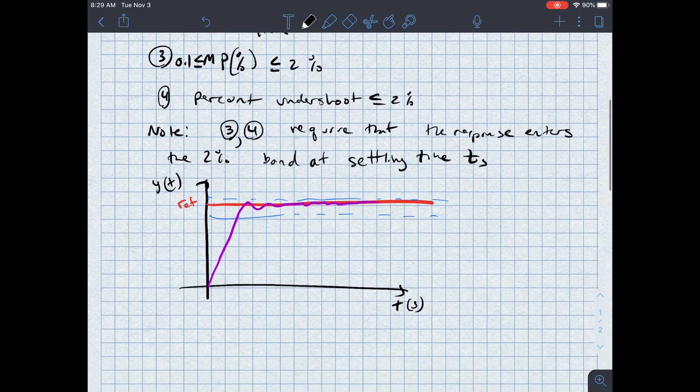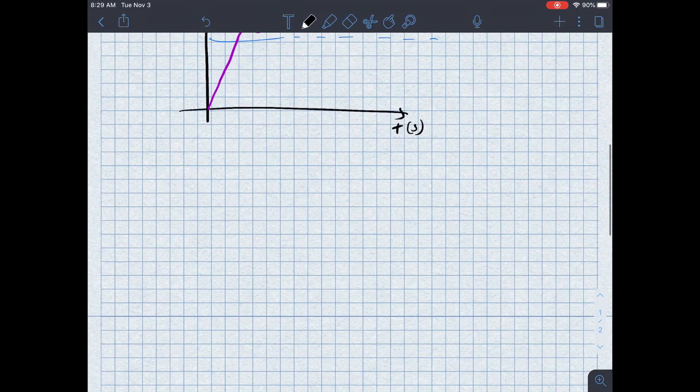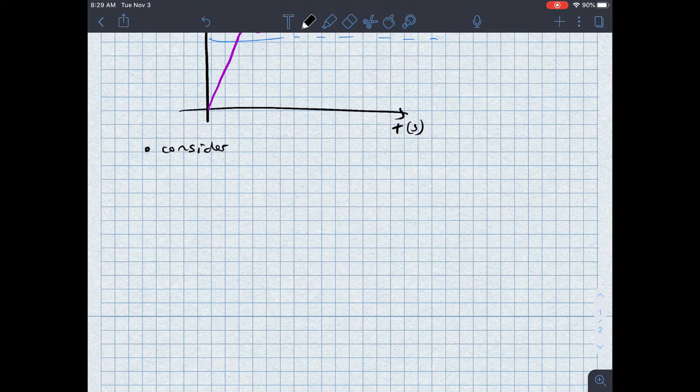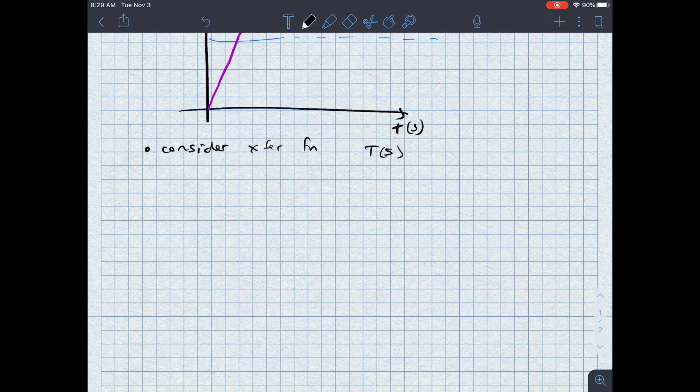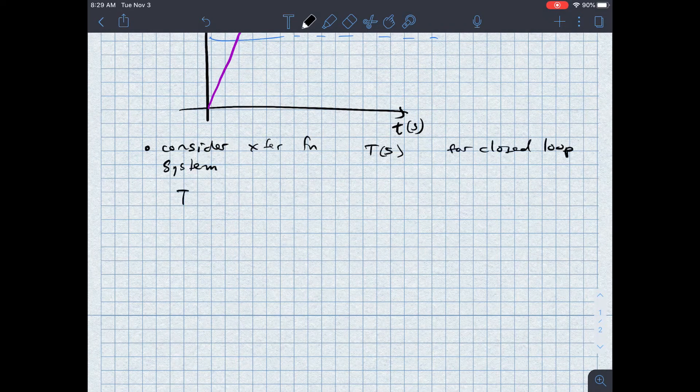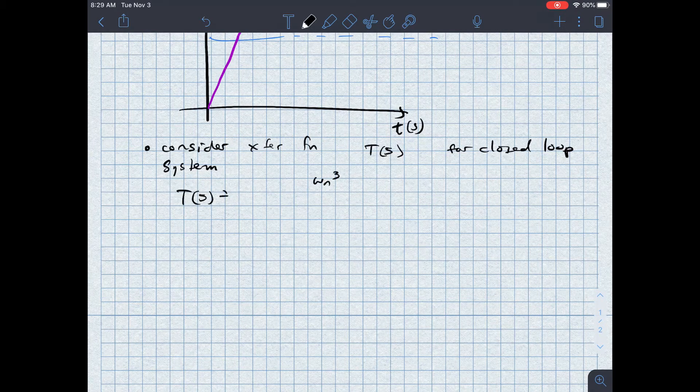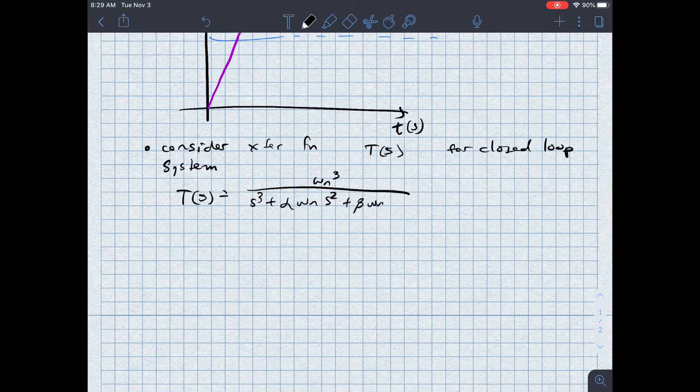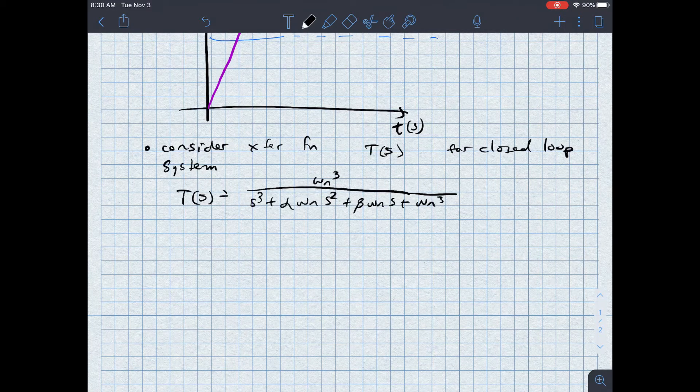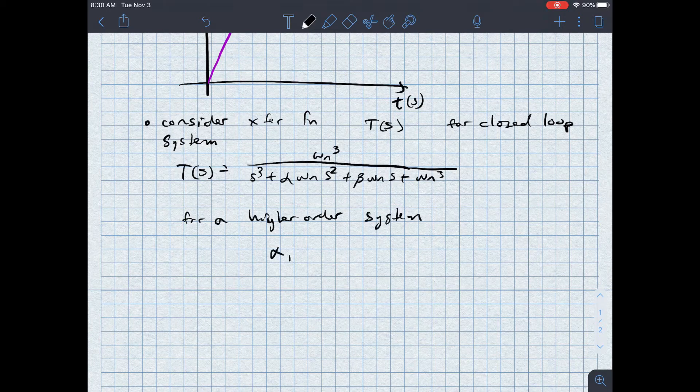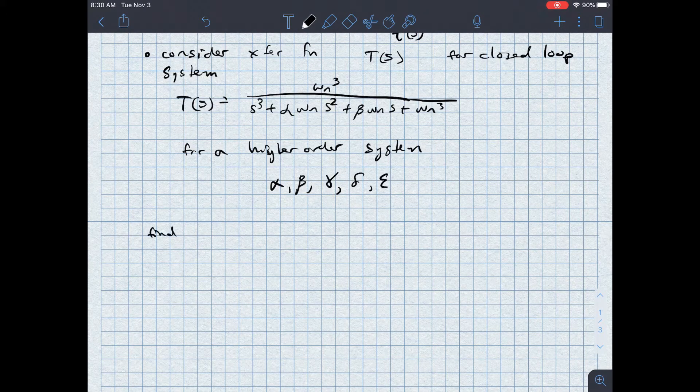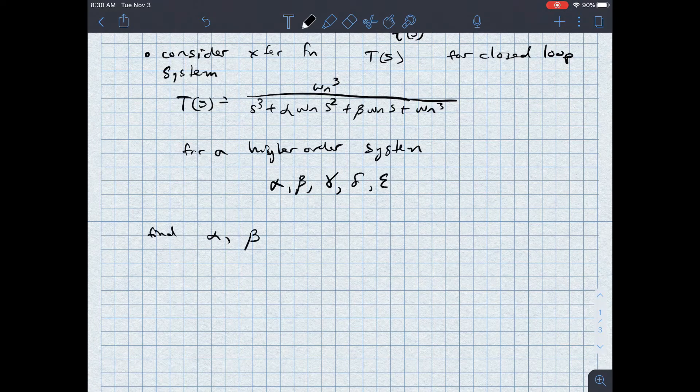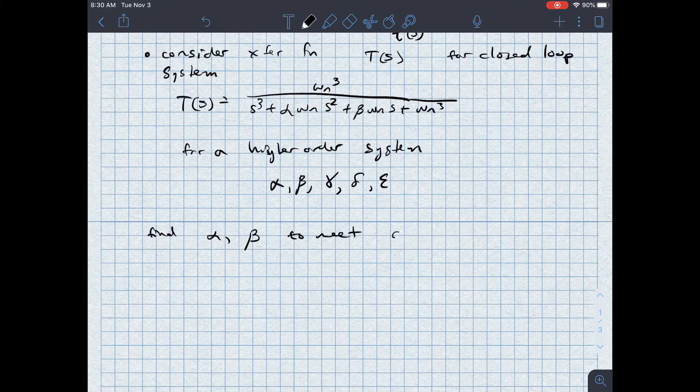So how do we make sure that a system is going to achieve this? To do that, I want to consider a particular transfer function. Consider the transfer function T of S, which represents the closed loop system. T of S is equal to omega N cubed over S cubed plus alpha omega N S squared plus beta omega N S plus omega N cubed. I will use alpha, then beta, then gamma, then delta, then epsilon. But what I want to do is find the values of alpha and beta to meet the deadbeat response characteristics.